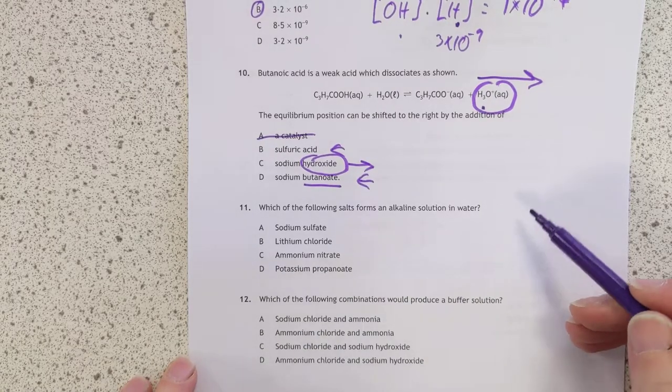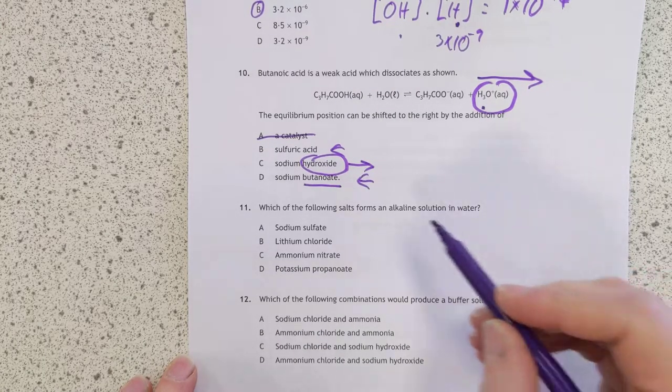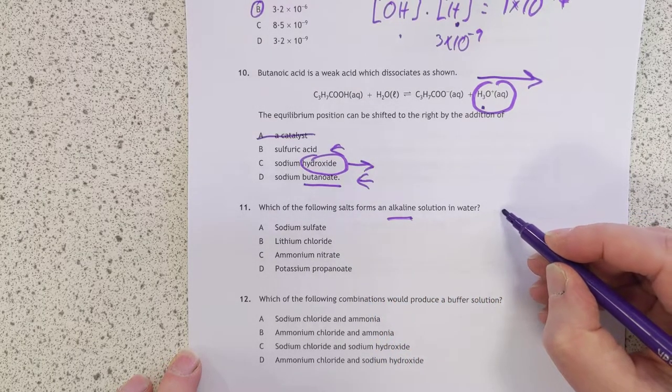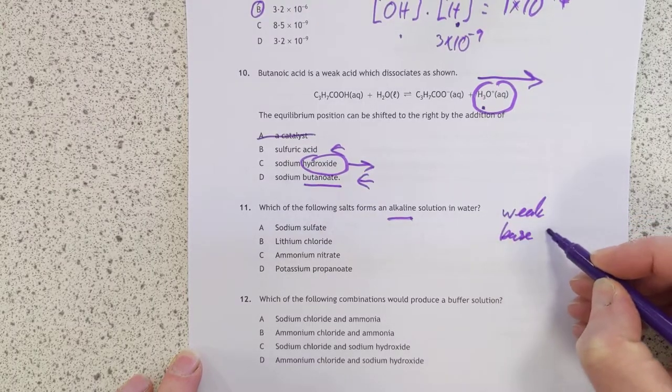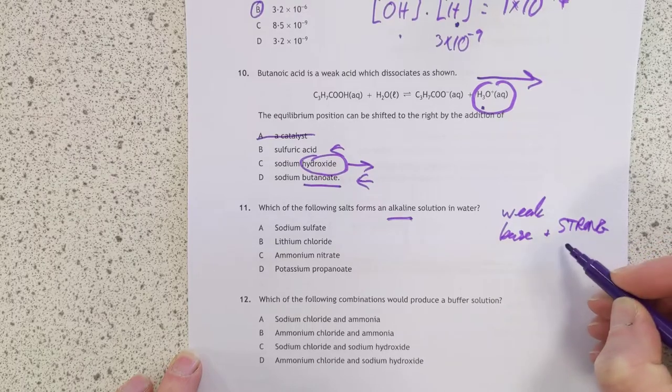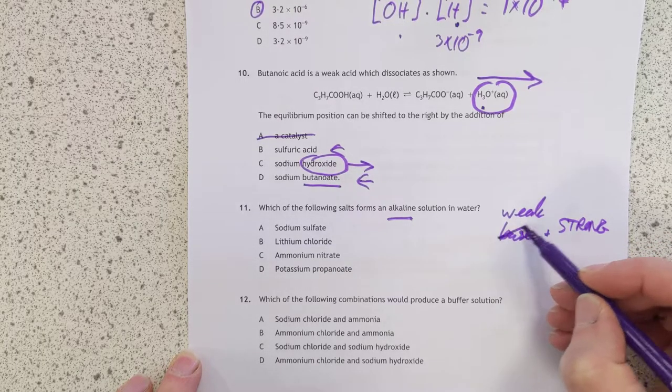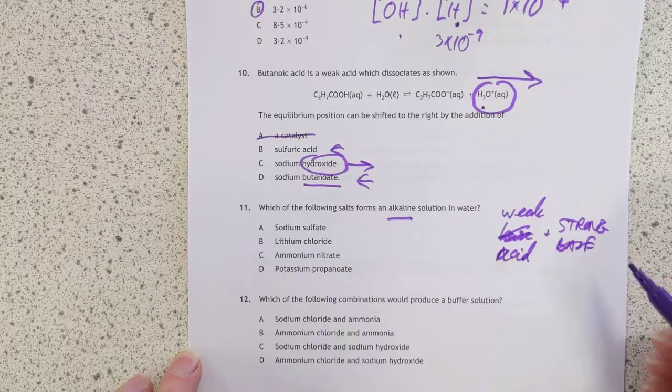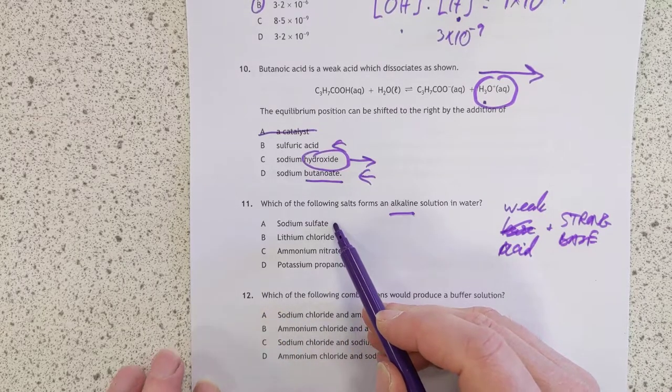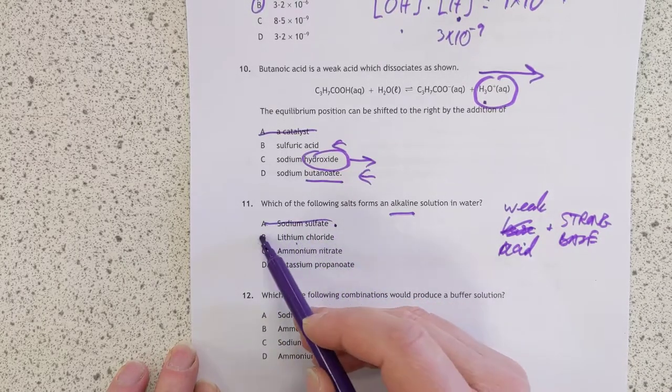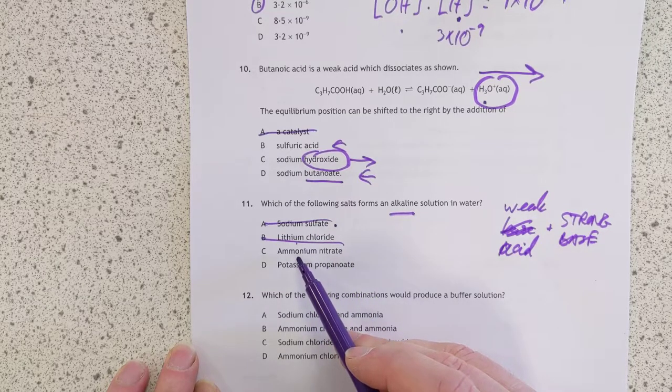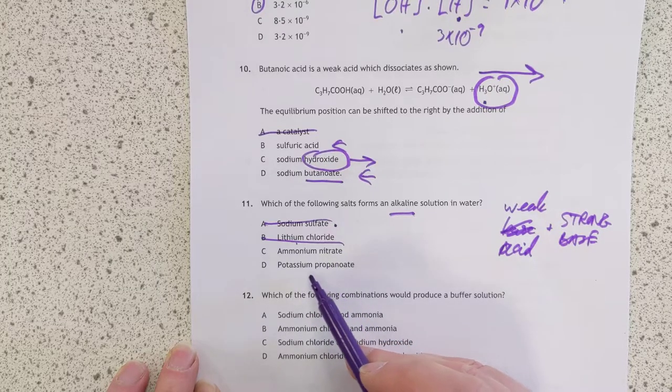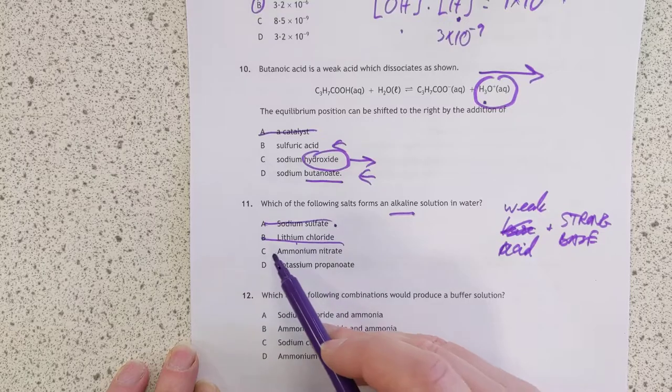Number 11. Which of the following salts forms an alkaline solution in water? If it's an alkaline solution, you need to have made it, it being a salt, from a weak base, and a strong acid. No, no, no, no. Stop thinking ahead, hey. A weak acid and a strong base. Try and get it right. So that's made from sulfuric acid, so that's nope. That's made from strong and strong, so that's a nope. Ammonium nitrate, that's a weak base, and a strong acid. It looks right. Potassium propanoate, yeah, that's strong base, weak acid. So the answer is C.